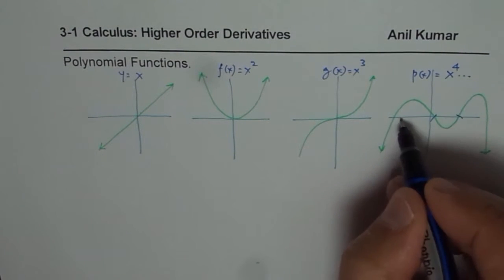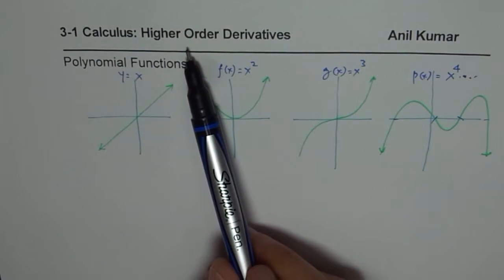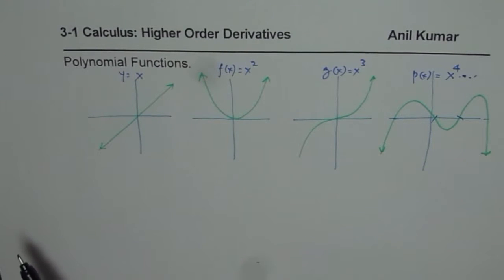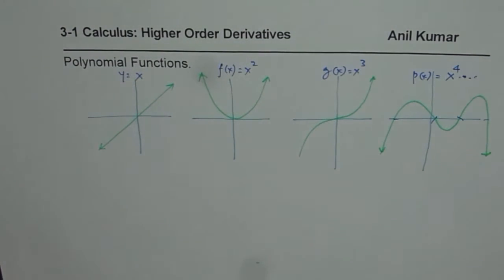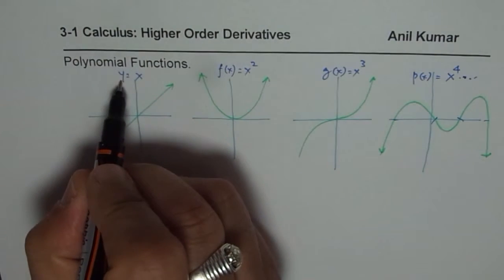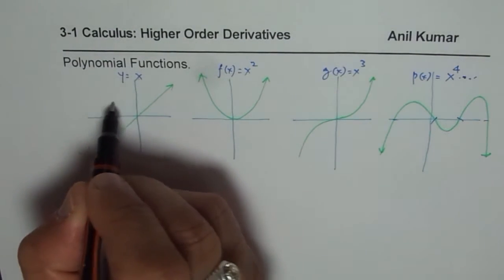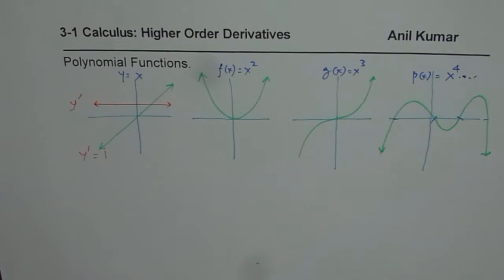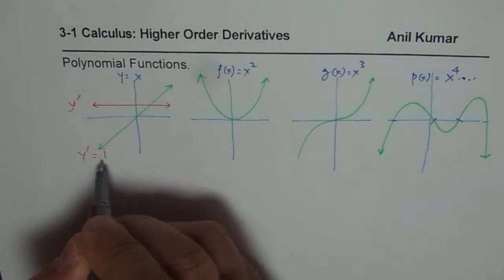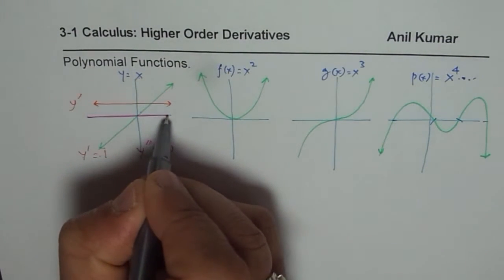From the equations it is quite simple. Whenever you have an equation, you can find the graph of a derivative. In this particular case, if the function is y equals to x, then y-dash will equal the derivative of x, which is 1. So I will draw a horizontal line at 1 — that becomes y-dash. For the second derivative y-double-dash, the derivative of the constant 1 is 0, so that will be a horizontal line at 0.